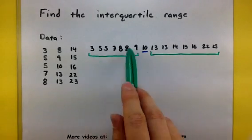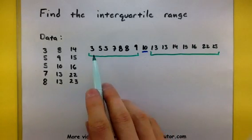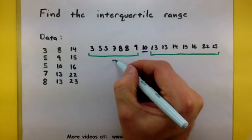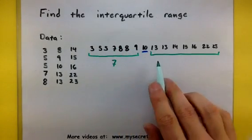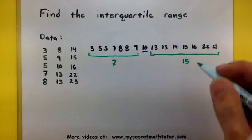So now let's find the median of this lower half and the median of the upper half. Let's see, I've got one, two, three, four, five, six, seven values here. The median would be the 7. For the upper half, looks like the median would be the 15.